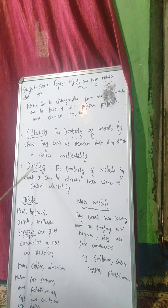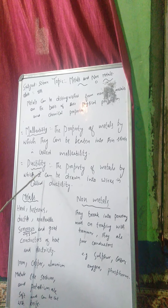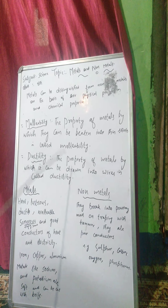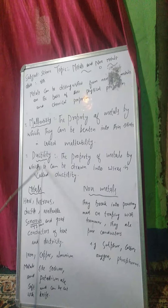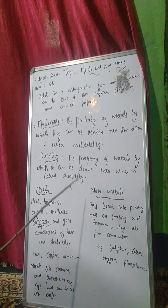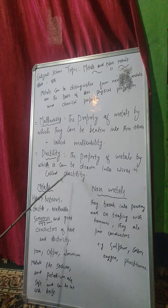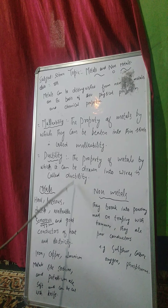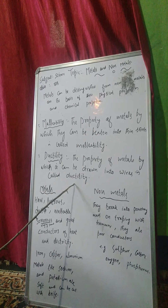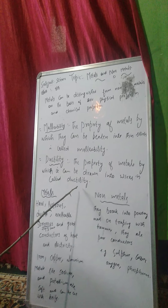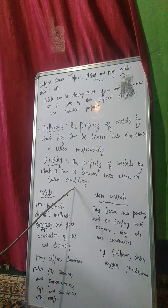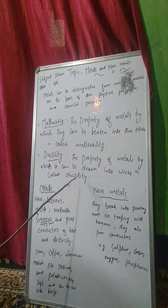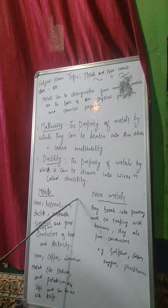The second one is ductility. Ductility kya hota hai? Yeh bhi metals ki property hai. The property of metals by which it can be drawn into wires is called ductility. Ductility bhi metals ki property hai jisse metals ko wires vagera mein convert kar sakte hai. Is property ko hum ductility bolte hai.